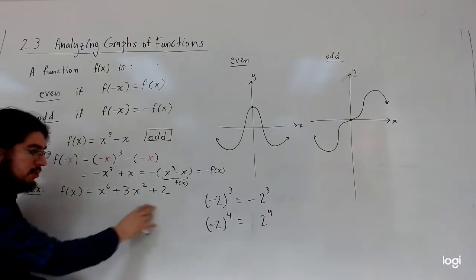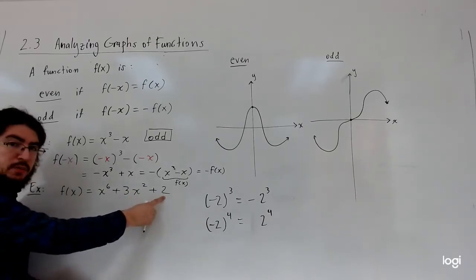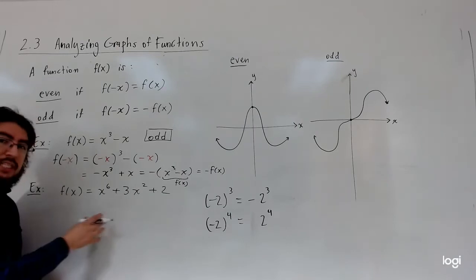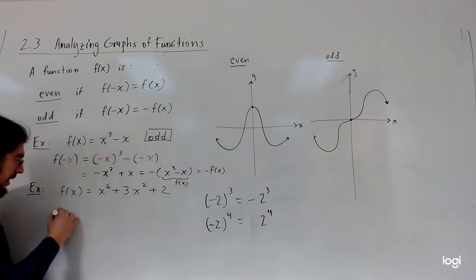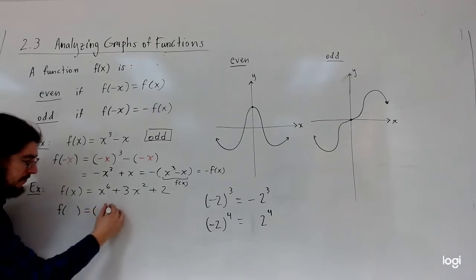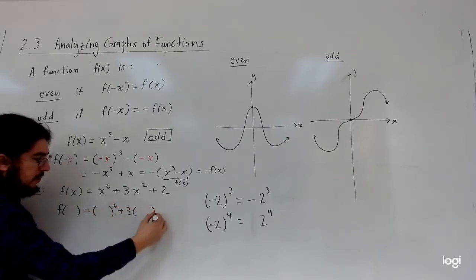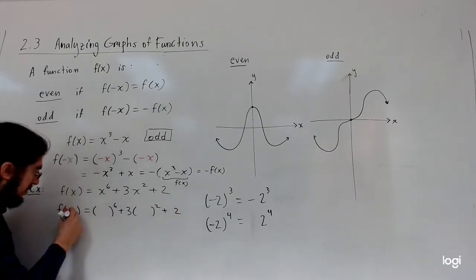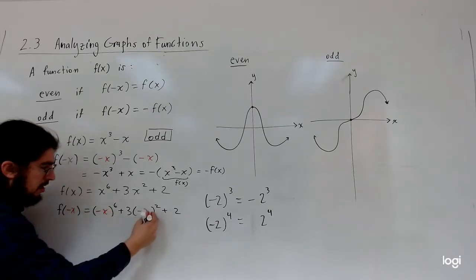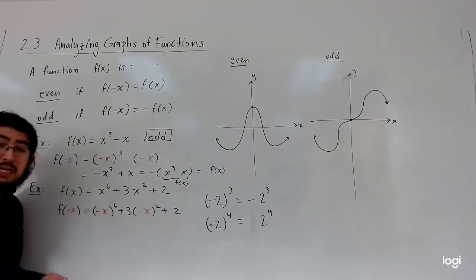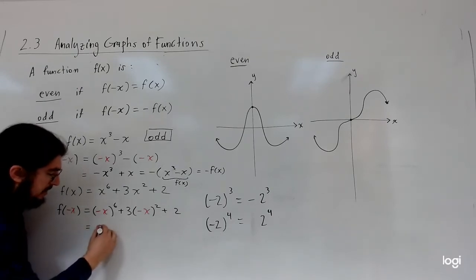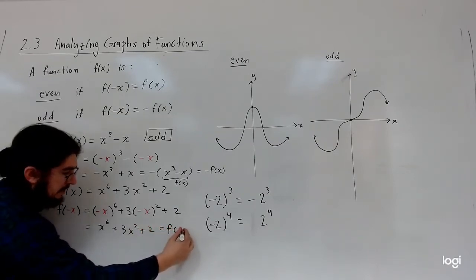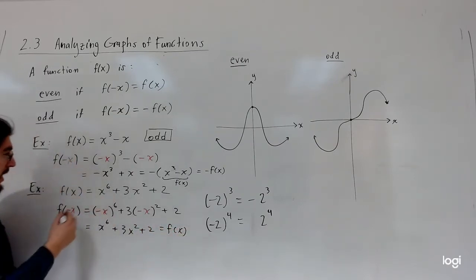For the second example, f of x equals x to the sixth plus 3x squared plus 2. The powers are only even, and the constant term 2 can be written as 2 times x to the zero — zero is even. Replacing x with negative x: a negative to an even power goes away, so we get x to the sixth plus 3x squared plus 2, which is back to f of x. So this function is even.